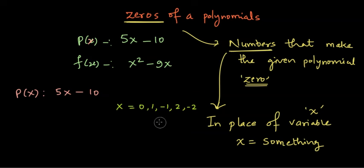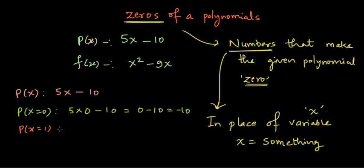So let us start with x equal to 0. If we put x equal to 0 here, P(0) becomes 5 times 0 minus 10, and this gives me 0 minus 10 or -10. So this is definitely not returning zero. Let us use x equal to 1. So if I put x equal to 1, then I have 5 times 1 minus 10, and this gives me 5 minus 10 which is -5. Still not zero.